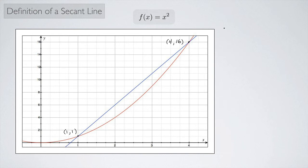And we can now calculate the slope. So the slope is the change in y over the change in x. That would be 16 minus 1 divided by 4 minus 1. 16 minus 1 is 15. 4 minus 1 is 3. 15 divided by 3 is 5.